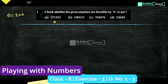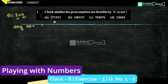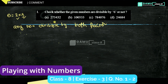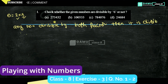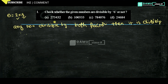For 2 and 3 we have divisibility rules. So if the given number is divisible by both 2 and 3, then it is also divisible by 6. Any number divisible by both factors is also divisible by their product.